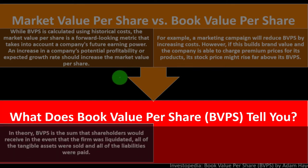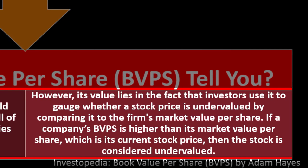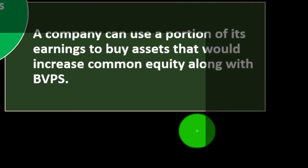What does book value per share tell you? In theory, book value per share is the sum that shareholders would receive if the firm were liquidated — all tangible assets sold and all liabilities paid. Its value lies in the fact that investors use it to gauge whether a stock price is undervalued by comparing it to the firm's market value per share. If a company's book value per share is higher than its current stock price, the stock is considered undervalued.